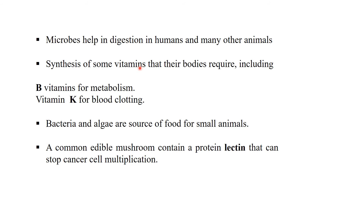Microorganisms help in digestion in humans and many other animals. They help in the synthesis of some vitamins required by living organisms — important vitamins like B vitamins, which help in metabolism and different chemical reactions in digestion, and vitamin K, which helps in blood clotting. These vitamins are produced by different microorganisms in the body. Bacteria and algae are sources of food for small animals and are important parts of the food chain. Different types of drugs and antibiotics can be obtained from microorganisms.